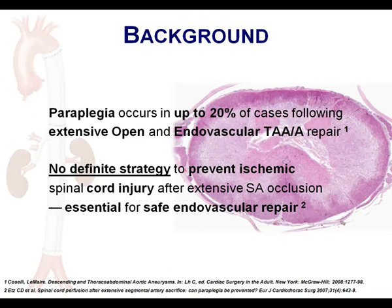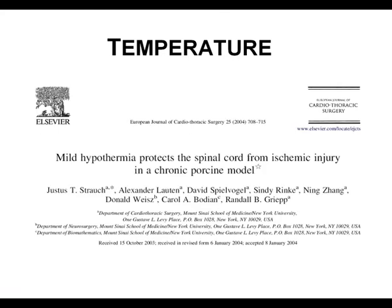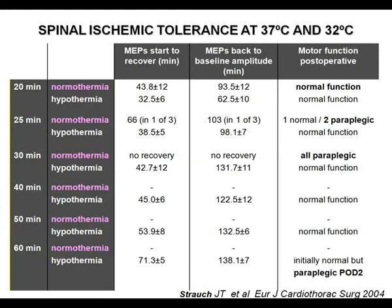Regarding temperature: an experimental series on mild hypothermia in a porcine model compared groups at 32 and 37 degrees. After 20 minutes of aortic cross-clamping, hind limb function was preserved in both groups. After 25 minutes, the majority of normothermic animals suffered spinal cord injury; after 30 minutes, all normothermic animals were paraplegic. In the hypothermic group the spinal cord initially tolerated 50 minutes, with delayed onset paraplegia after 60 minutes of cross-clamping.